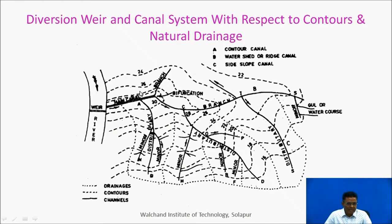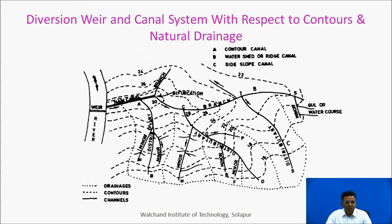The alignment of the canal system depends upon the geography. Here there is a weir, this is a main canal, and the contours are shown in dotted lines. We need to align all canals depending upon the geography. The alignment of canals according to geography is discussed in the next video.